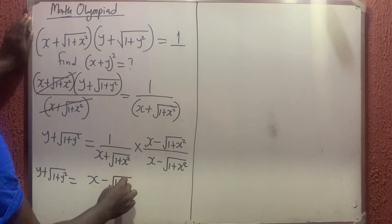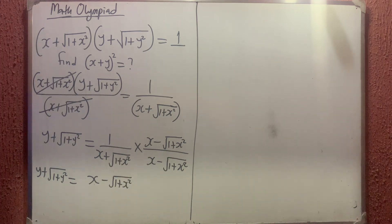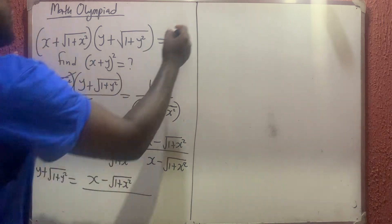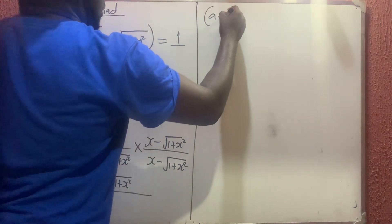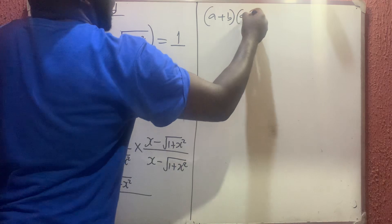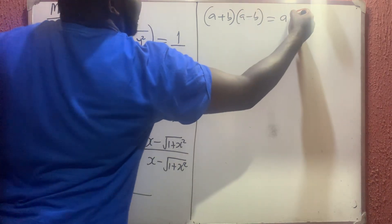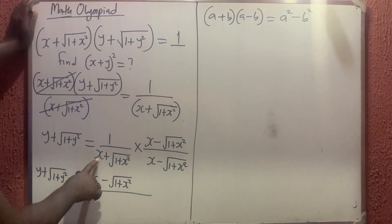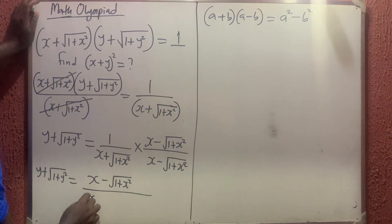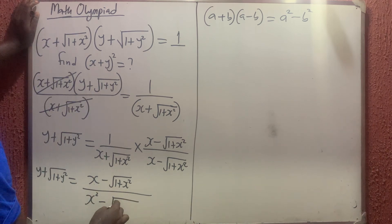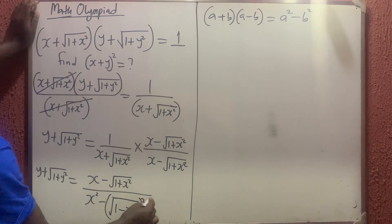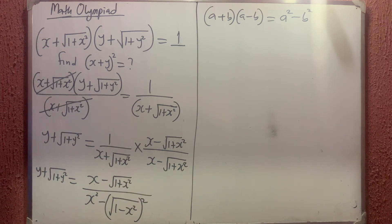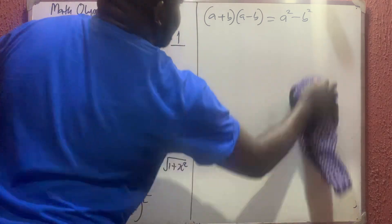So y plus the square root of 1 plus y squared equals x minus the square root of 1 plus x squared, all over the denominator. This is a difference of two squares — whenever you have (a + b)(a − b), the answer is a squared minus b squared. Let us apply that here: the first term squared minus the second term squared.